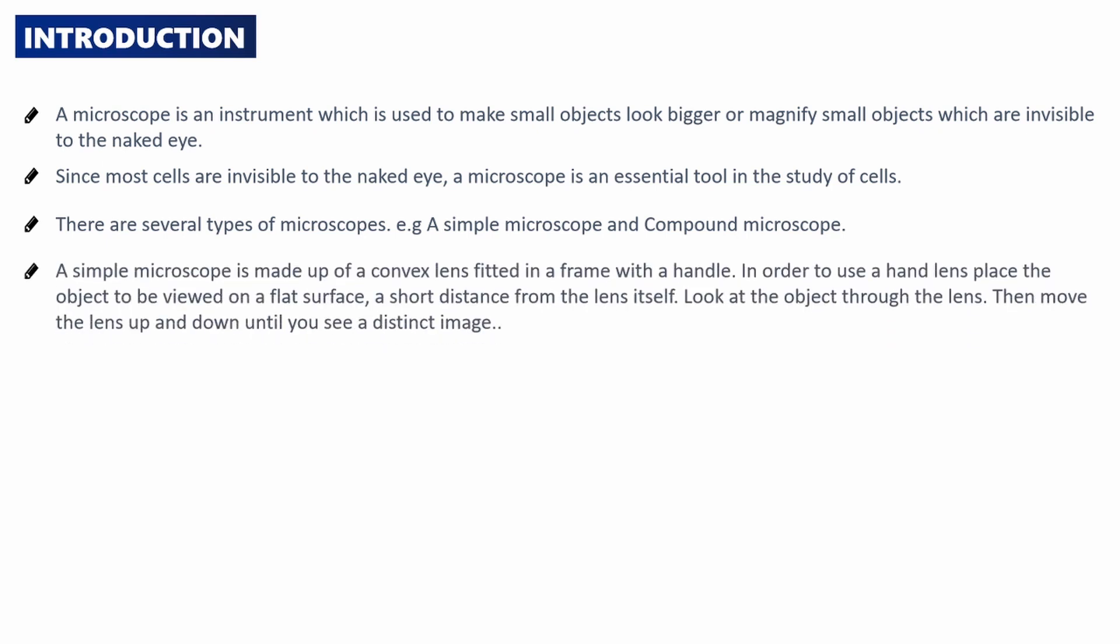A simple microscope is made up of a convex lens fitted in a frame with a handle. In order to use a hand lens, place the object to be viewed on a flat surface a short distance from the lens itself, look at the object through the lens, then move the lens up and down until you see a distinct image.